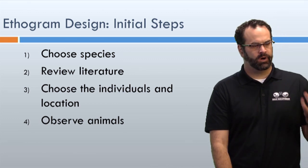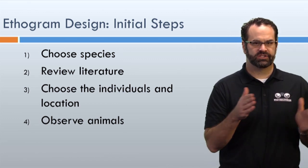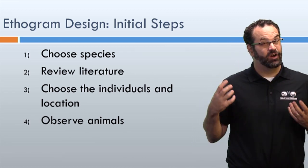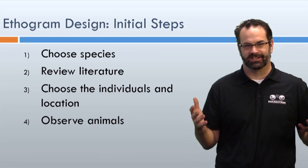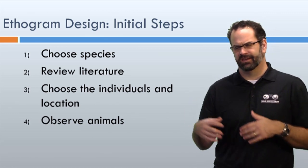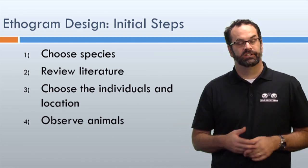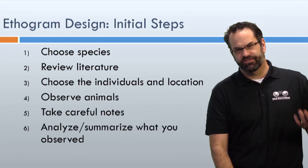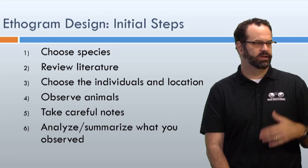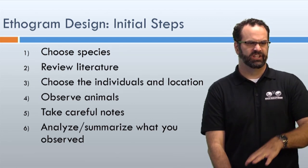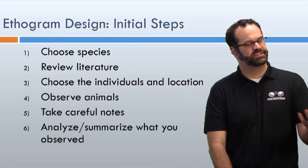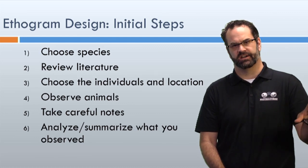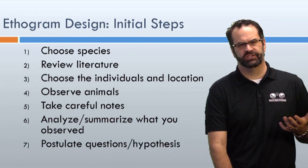Fourth, go observe the animals before you design your ethogram — watch what they actually do. Using the Santa Fe Zoo as an example, if you wanted to study Asian small-clawed otters, you need to know when they're active, because they're often sleeping. Are they more active in the morning, evening, or at night? Go out, take notes — maybe they were active at 8 a.m., inactive by noon, then came back around sunset, swam a lot. Use those notes to determine when to conduct your observations.